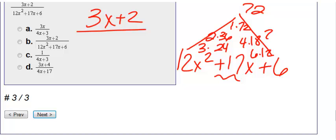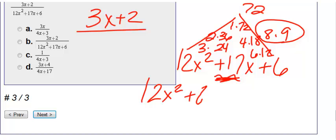And we have 8 times 9. My goal is to get a positive 17. The only way for me to get a positive 17 is an 8 and a 9. Positive 8, positive 9. So I'm going to factor this down into 12x squared plus 8x plus 9x, and then I still have my plus 6.